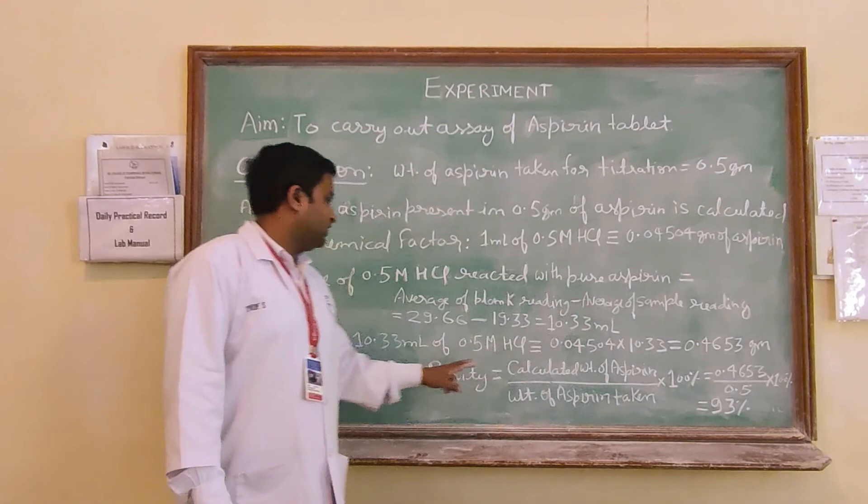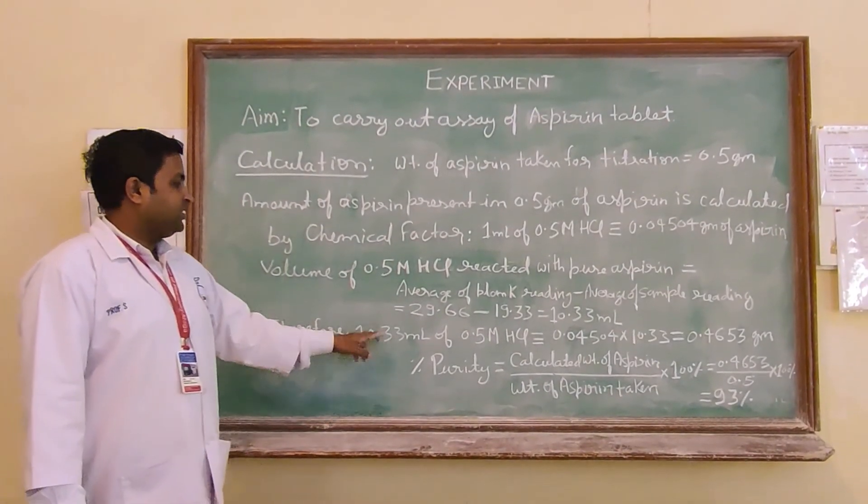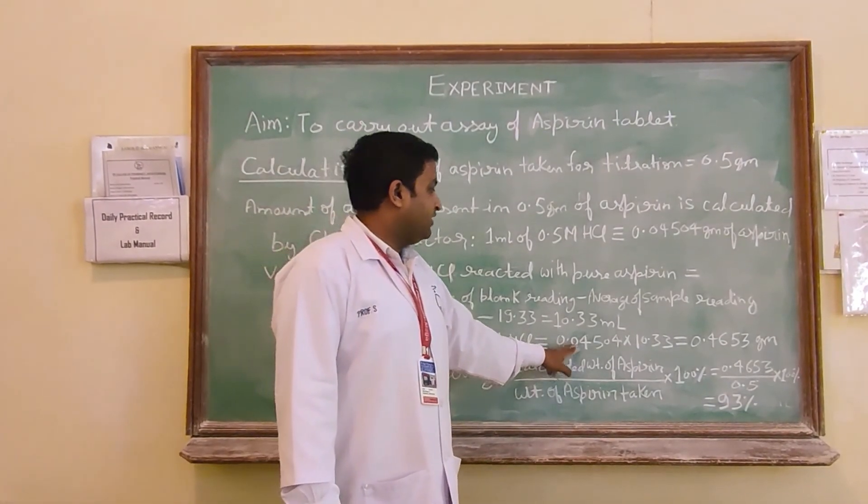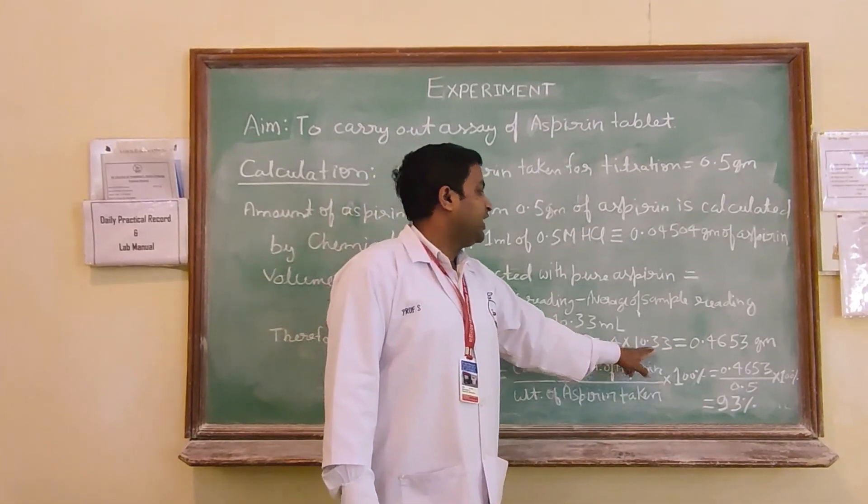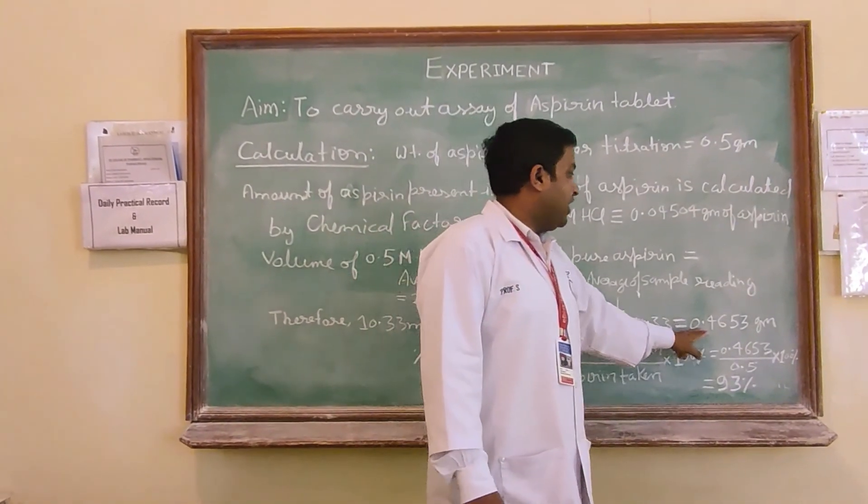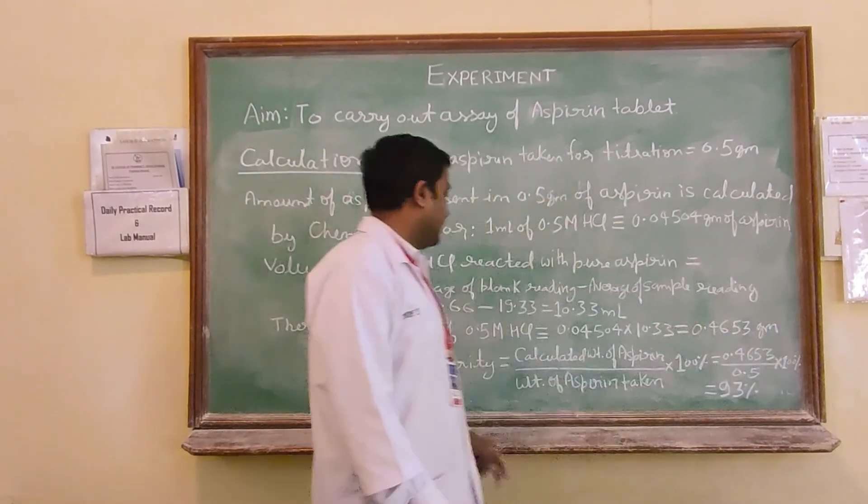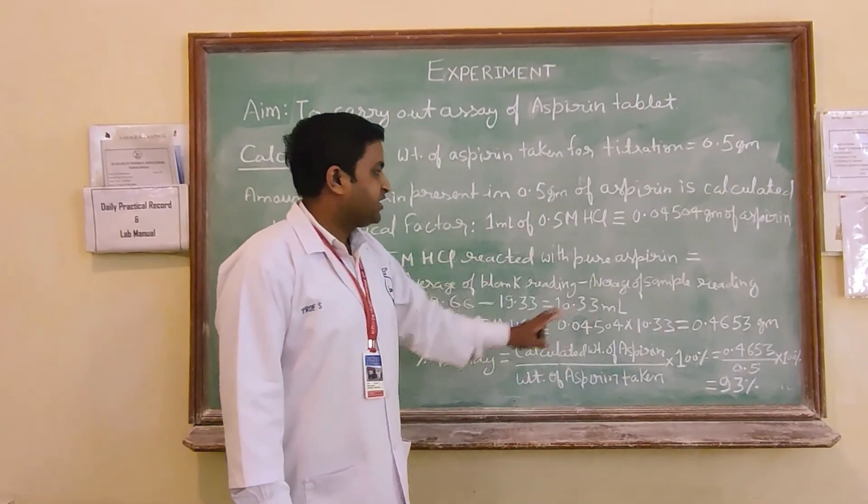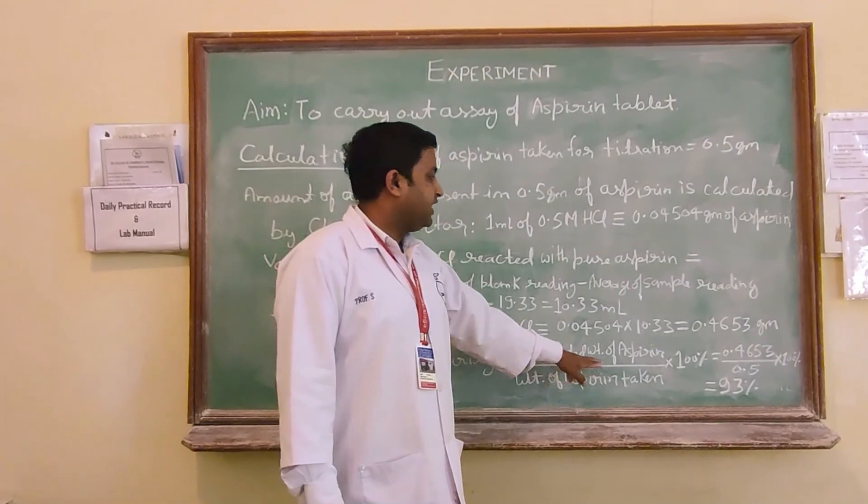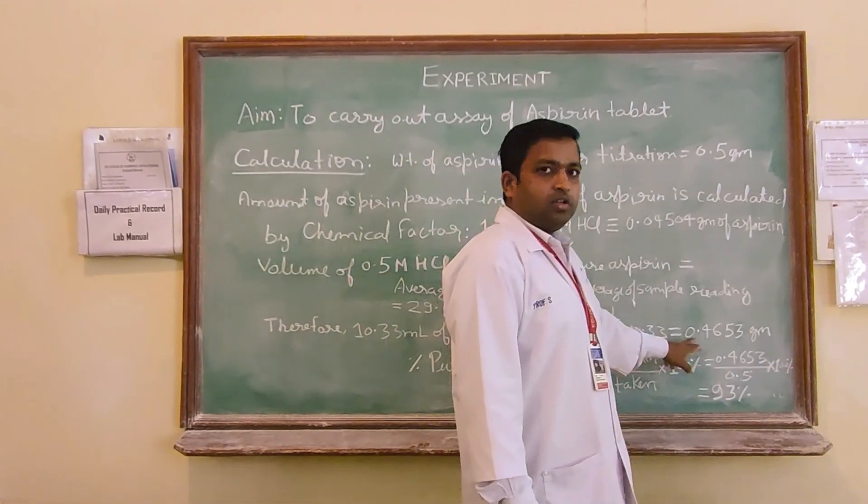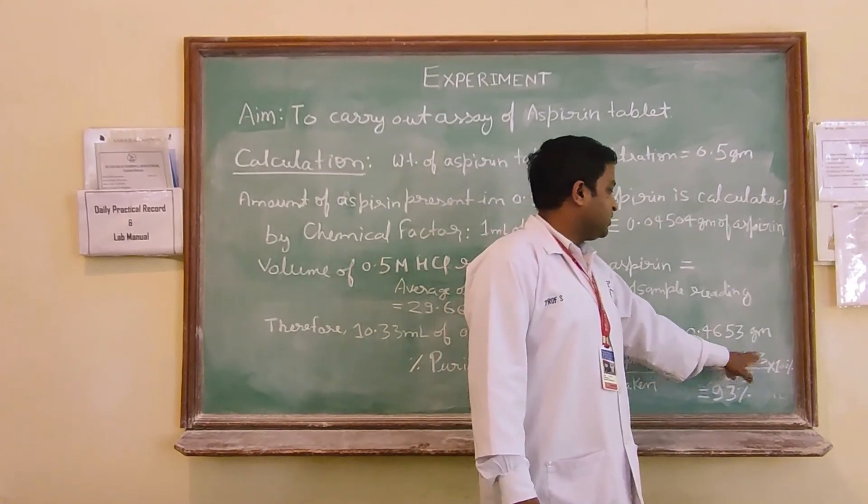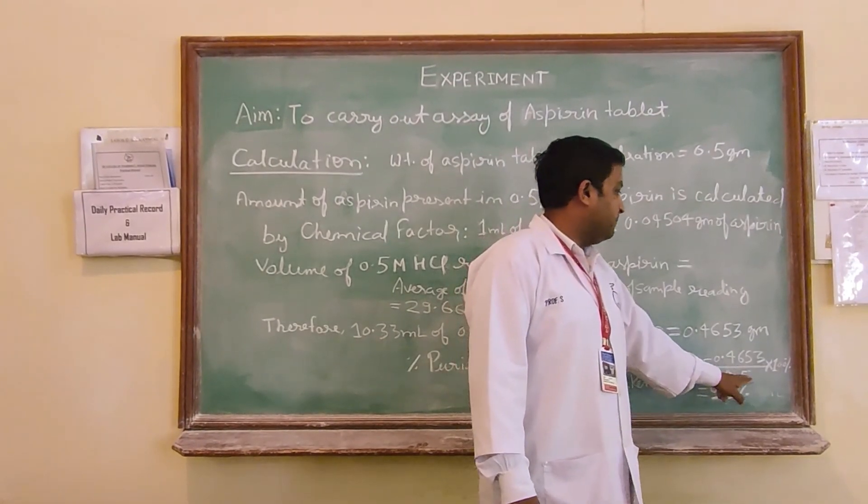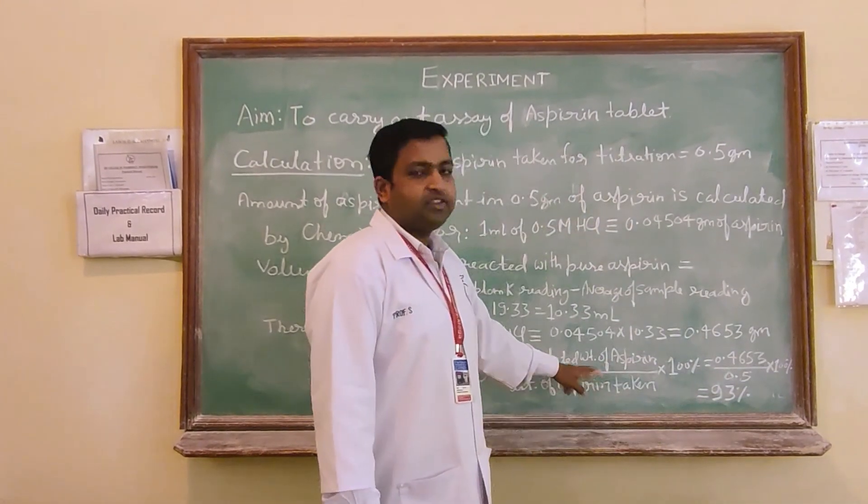Therefore 10.33 ml of 0.5 molar HCl will be equivalent to 0.04504 into 10.33 which will be 0.4653 gram. Hence the percentage purity will be calculated by calculated weight of aspirin divided by weight of aspirin taken into 100. Calculated weight of aspirin is 0.4653 and actual weight of aspirin that was taken 0.5 gram into 100, it will be 93%.